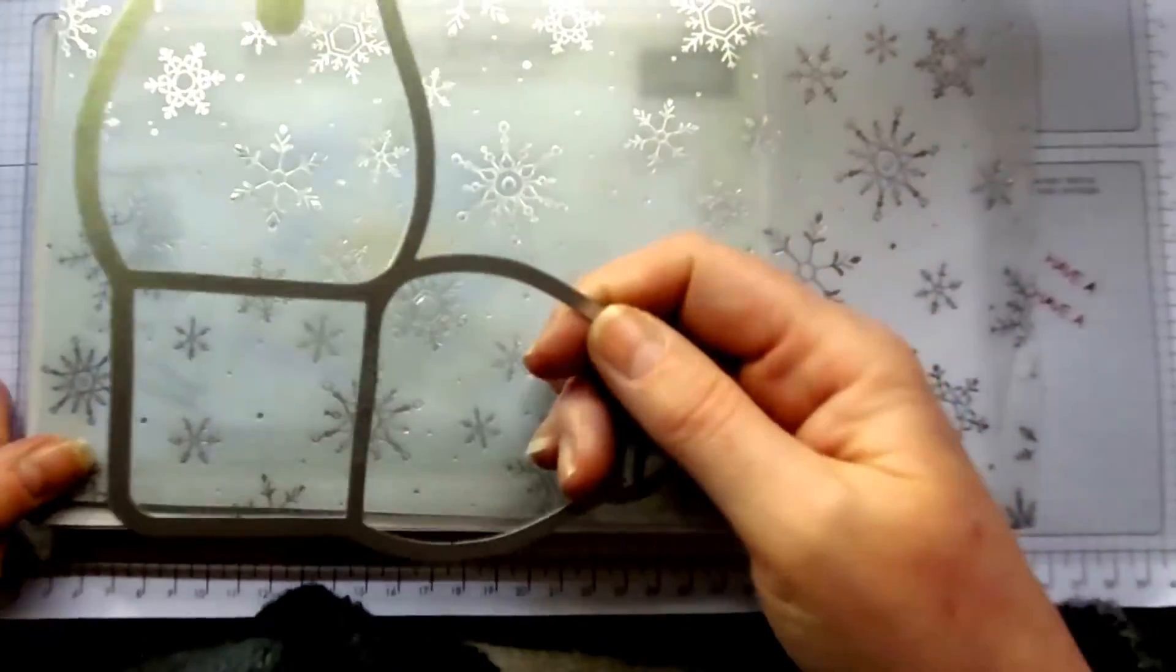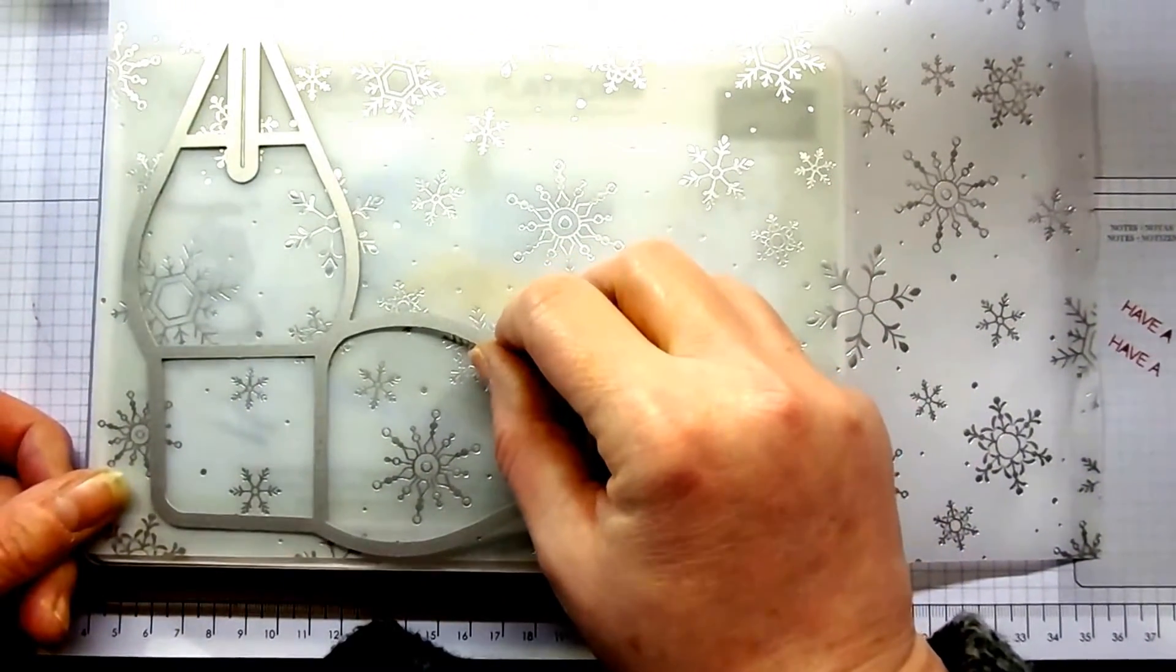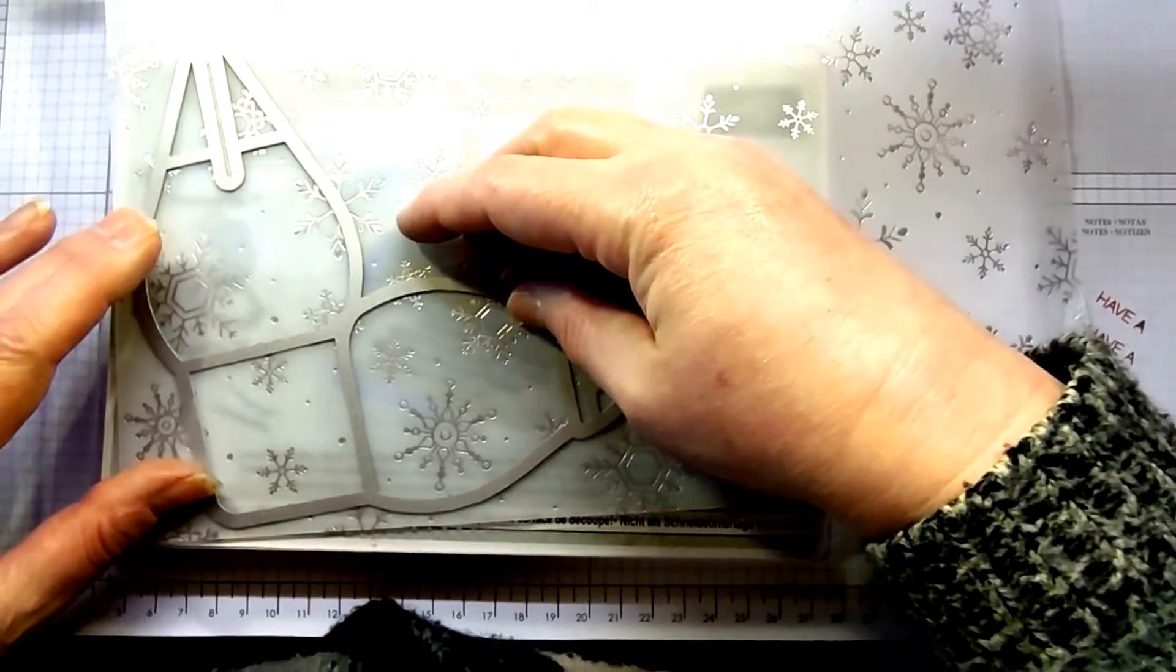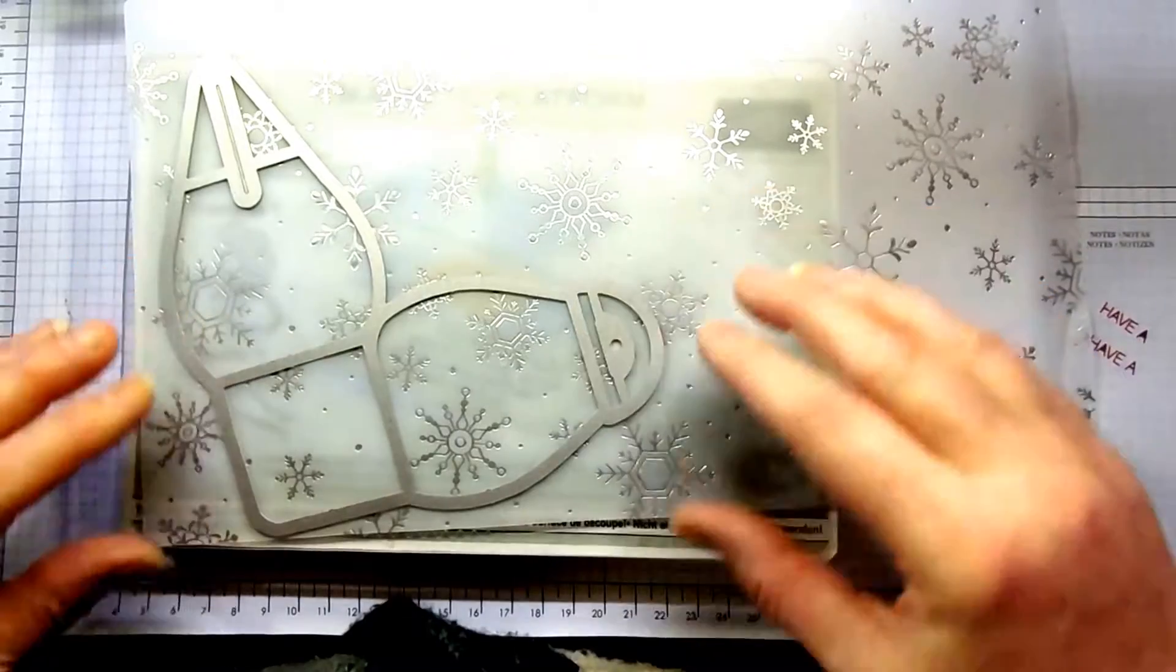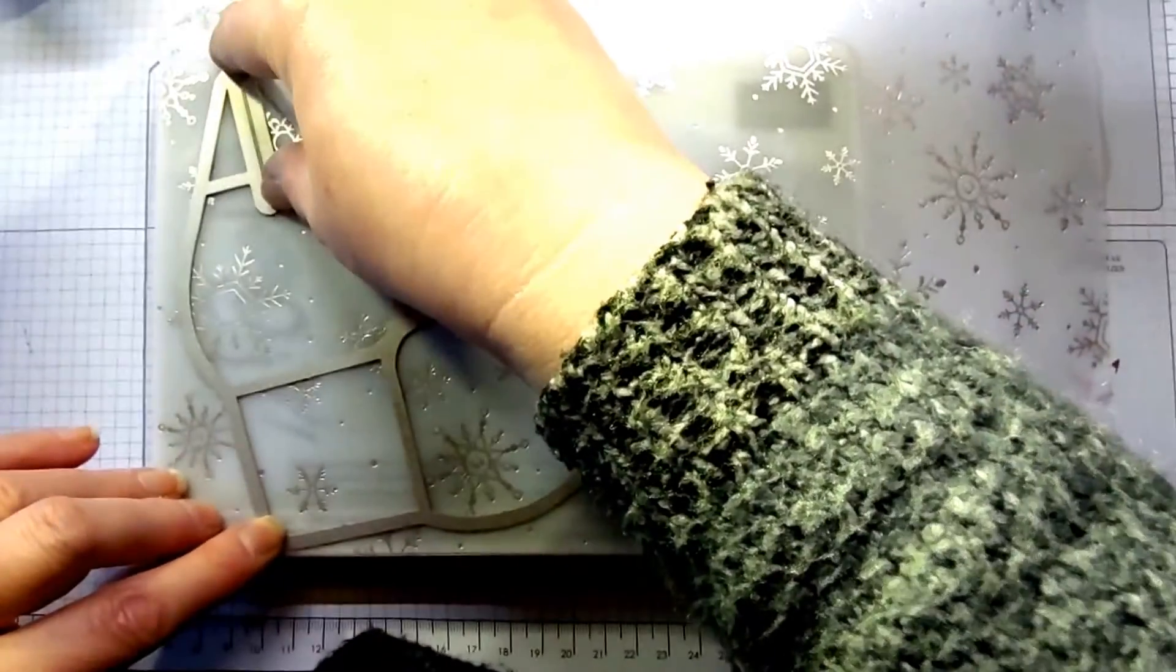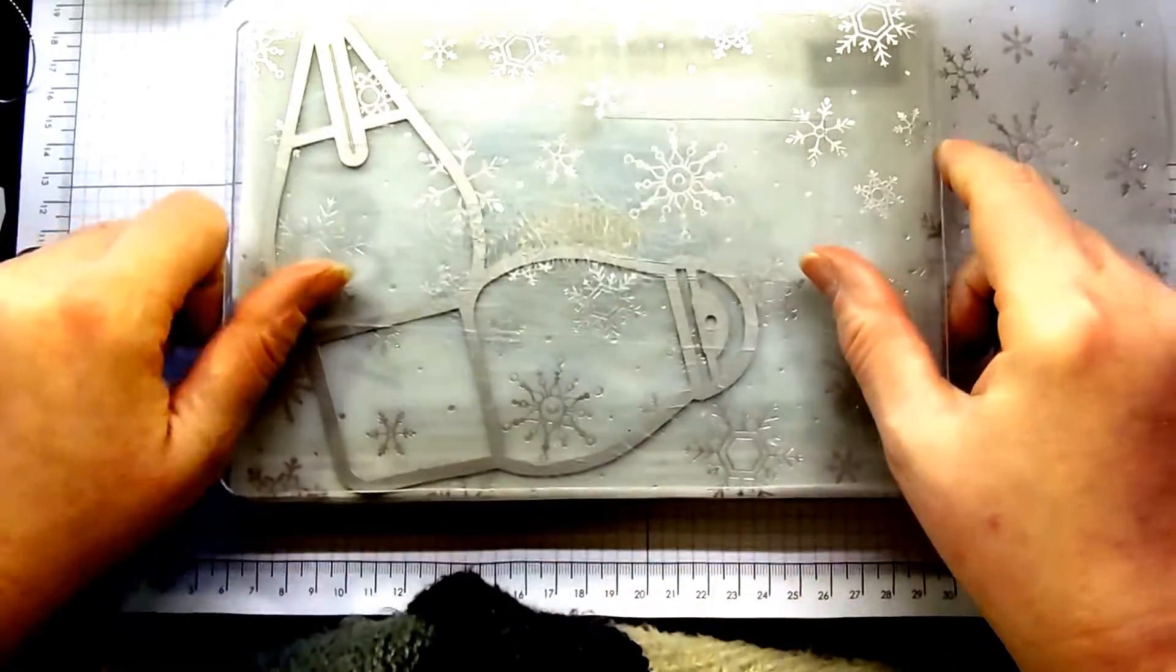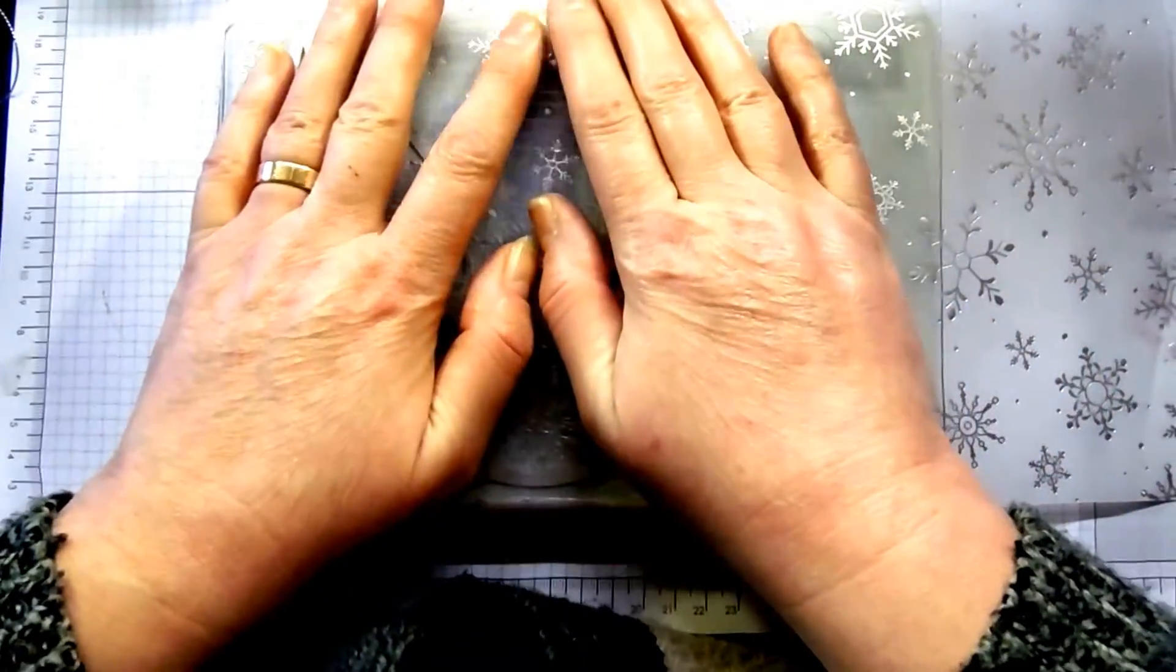Then you pop your vellum on top of that, and on top of that goes your die. You'll see that you have to have a bit of an angle, so it has to go through a bit like that. Otherwise it won't fit through your Big Shot. Then the other piece comes around here.